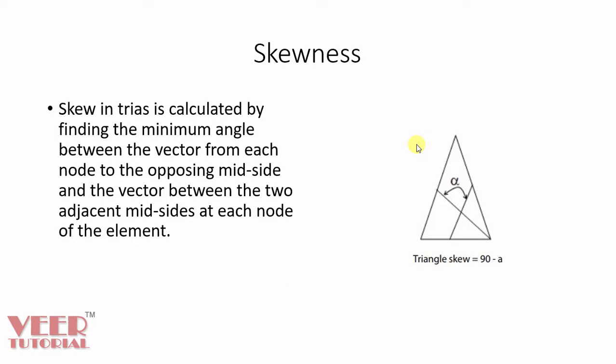Skewness is calculated for tria element and quad element. In case of tria element, skewness is calculated by finding the minimum angle between the vector from each node to the opposite node mid-surface and the vector between the two adjacent mid-sides at each node of the element. So we have a triangle here. In this triangle, I take out the midpoint of two lines. This is the midpoint and this is the midpoint of these two lines. And then from this end point, I draw a line like this. And then from this midpoint to second midpoint, I draw another line. Now the angle between these two lines is represented by this skewness. And this skewness is defined as 90 minus this angle alpha. So this is the minimum angle.